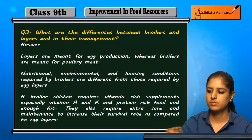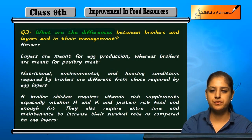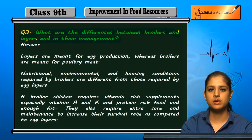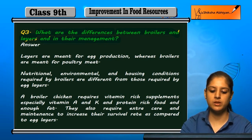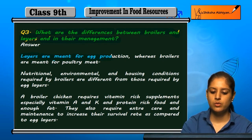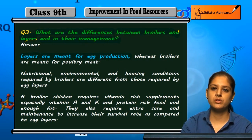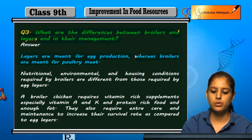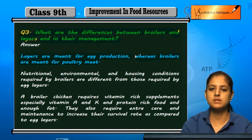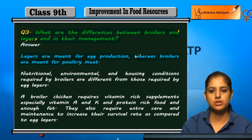Question 3: What are the differences between broilers and layers in their management? Layers are raised for egg production — they are called layers. Whereas broilers are meant for poultry meat. So, layers are for egg production and broilers are for meat or chicken.